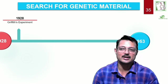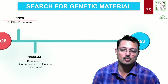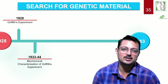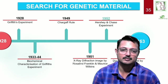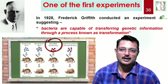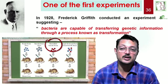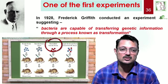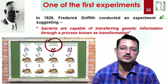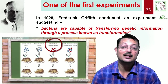It all started in 1928 with Griffith's experiment. Then we move on to biochemical characterization by Avery, McCarty, and McLeod. Very quickly, on this timeline: in 1928, Frederick Griffith conducted an experiment and suggested that bacteria are capable of transferring genetic information through a process called transformation.